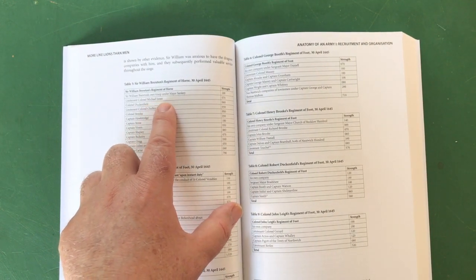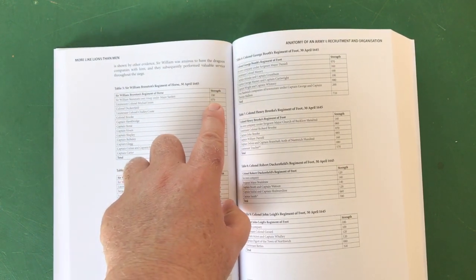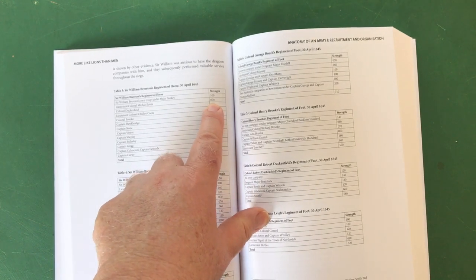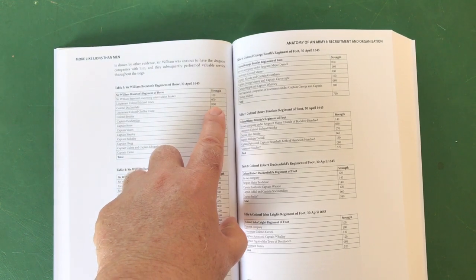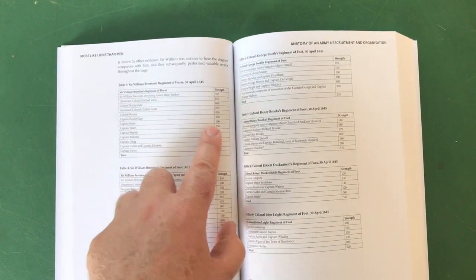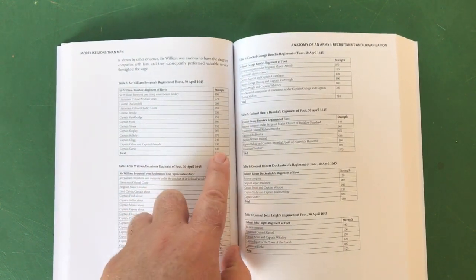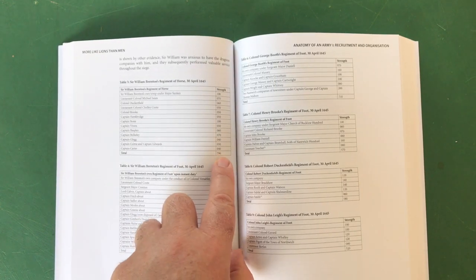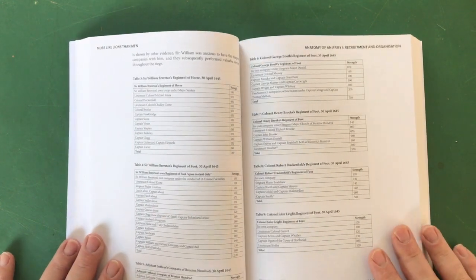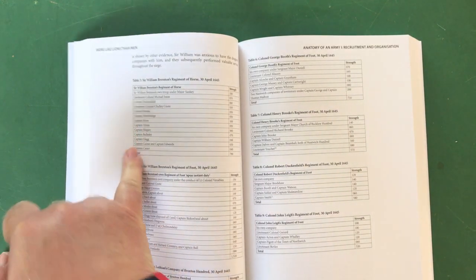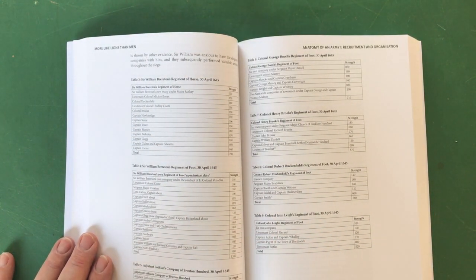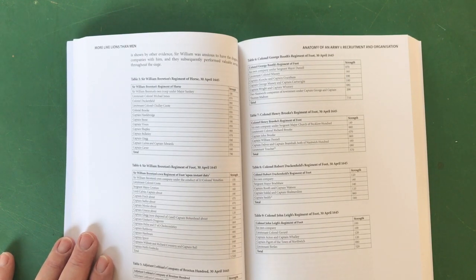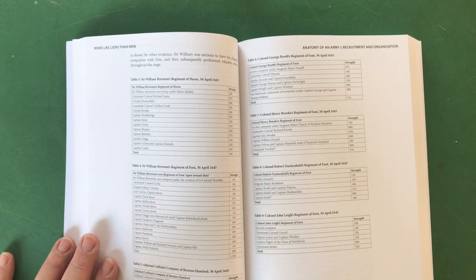The breakdown is wonderful. William Brereton's own troop under Major Sankey, strength 100 men. Lieutenant Colonel Michael Jones, strength - and again here's this irritating leading zero - 70 men. Colonel Duckenfield 60 men and so on, all the way down to Captain Carter with 40 men, making a total of 790 men. You've actually got all the individual officers' names. This is wonderful.